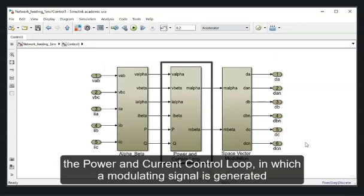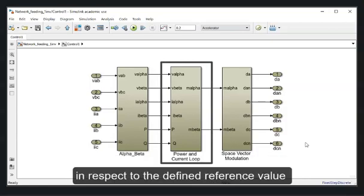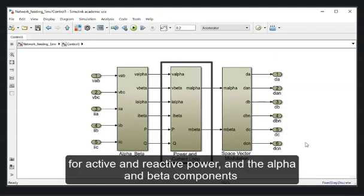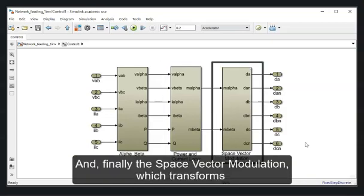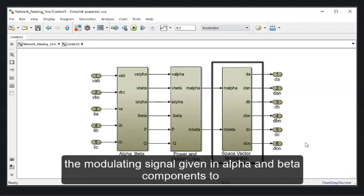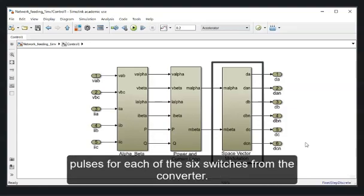The power and current loop, in which a modulating signal is generated in respect to the defined reference value for active and reactive power, and the alpha and beta component of the measured current and voltage values. And finally, the space vector modulation, which transforms the modulating signal given in alpha and beta components to pulses for each of the six switches from the converter.